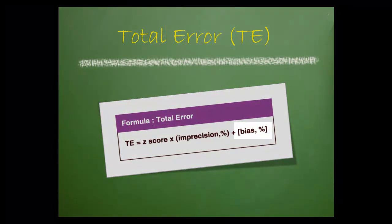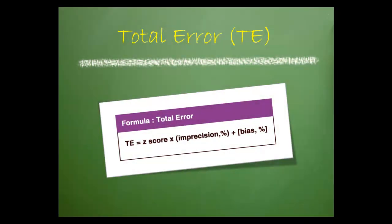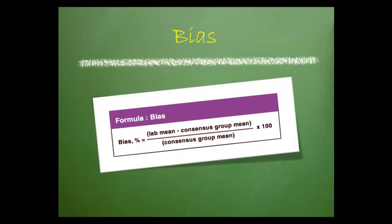The last component of the total error equation is bias. This is expressed as bias percent. To calculate bias percent,